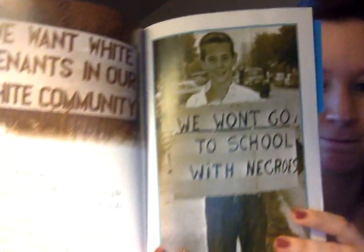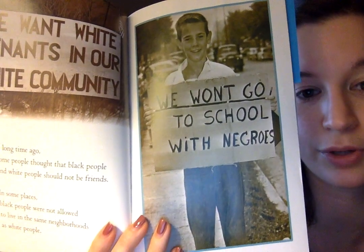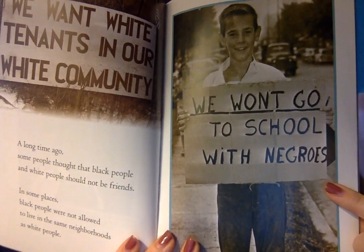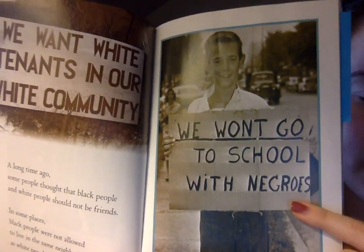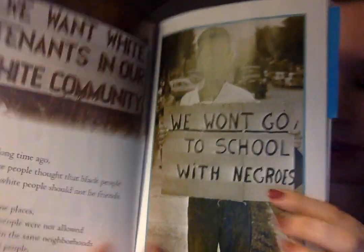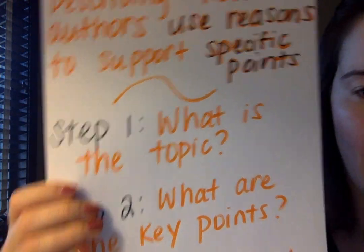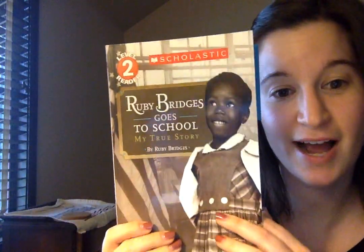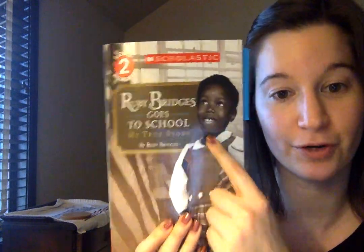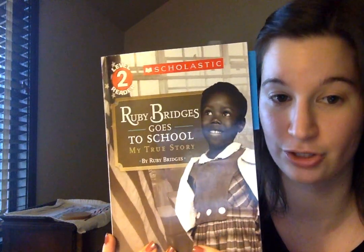We're going to take a look at this picture and answer this question: how do the details in this picture support the key point that white people wanted blacks and whites to be separate? We can see a boy holding a sign that says 'we won't go to school with negroes.' Now let's take a look at our steps. Step one, what is the topic? Looking at the title and reading throughout the text, I can tell this text is all about Ruby Bridges and her experience being the first black child to attend William Frantz Elementary School. That's our topic.